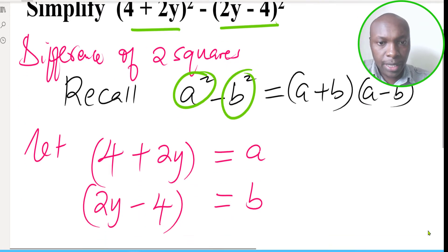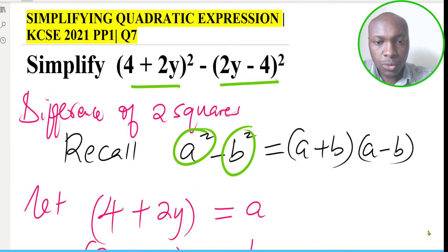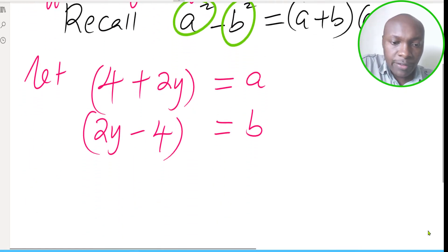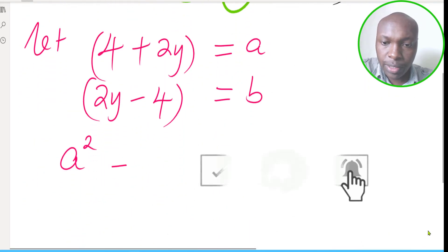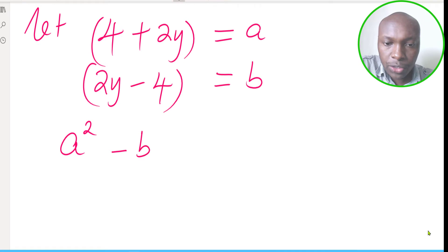So (4 + 2y)² will therefore be represented by a², then (2y - 4)² will be represented by b².